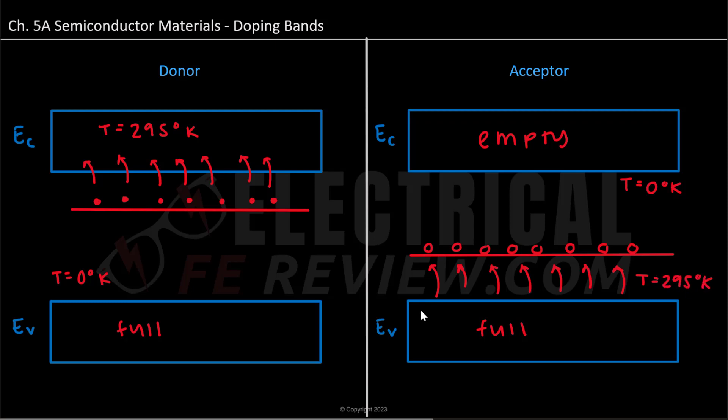So now in our valence band, we have holes, which is our positive charge. And then going back to our donors, we now have negative charges in our conduction band.